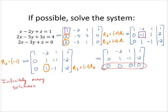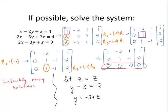So what we generally do here is we let z be itself. And now we use back substitution to solve for y and x. I know from the second row that y minus z is negative 2. Adding z to both sides, y is negative 2 plus z.